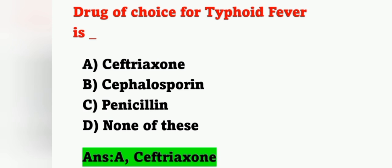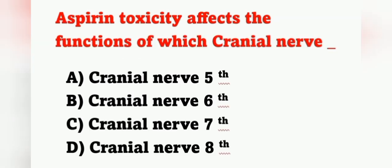Next question: aspirin toxicity affects the function of which cranial nerve? Option A: cranial nerve 5, option B: cranial nerve 6, option C: cranial nerve 7, option D: cranial nerve 8. Aspirin is also known as acetylsalicylic acid.